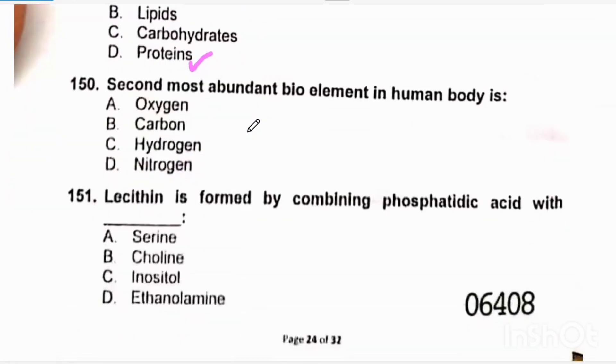The second most abundant bioelement in human body is carbon. The most abundant bioelement is oxygen, then carbon, then hydrogen. First one is oxygen, second one is carbon. So correct option will be beta.